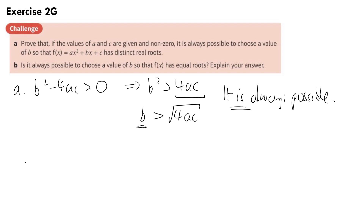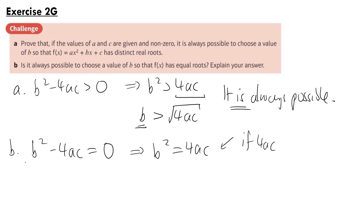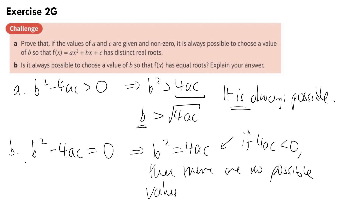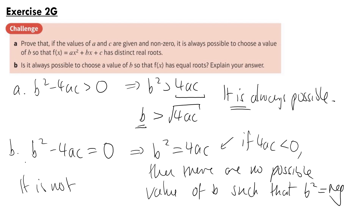In part B: is it always possible to choose a value of b so that f(x) has equal roots? For equal roots, b² - 4ac = 0, so b² = 4ac. If 4ac is negative, there are no possible values of b such that b² equals that negative number, since squares are always non-negative. Therefore, it is not always possible to choose such a value of b.